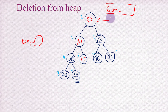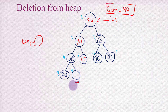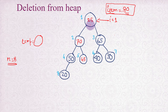Let's do one more deletion. This time 80 is in the root, so we take out 80 into the variable 'item' and i is 1. We copy the last element, which is 25, into the root. We delete 80 and take 25 to the root. Then we reduce the total number of elements by 1, which practically deletes index 9 from the heap tree - the total number of elements in the array is now 8.